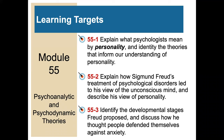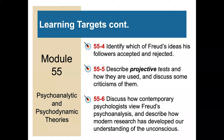There are six learning targets for this module. First, explain what psychologists mean by personality and identify the theories that inform our understanding of it. Second, explain how Sigmund Freud's treatment of psychological disorders led to his view of the unconscious mind and describe his view of personality. Third, identify the developmental stages Freud proposed and discuss how he thought people defended themselves against anxiety. Fourth, identify which of Freud's ideas his followers accepted and rejected. Fifth, describe projective tests and how they are used and discuss some criticisms of them. Finally, discuss how contemporary psychologists view Freud's psychoanalysis and describe how modern research has developed our understanding of the unconscious.